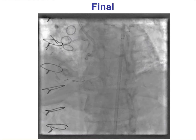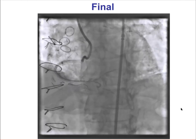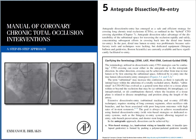We let the vessel heal, knowing that the vessel very often grows in size in the months after successful recanalization of the CTO. In summary, the second case demonstrates the application of the stick and swap technique even when the distal true lumen is compressed, and illustrates the utility of intravascular imaging with OCT to detect any dissection distal to the stents to guide whether further stenting is needed. All this information, including a step-by-step description of antegrade dissection reentry, is included in the Manual of Coronary CTO Interventions.